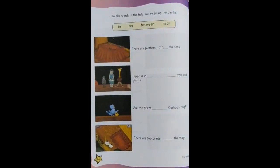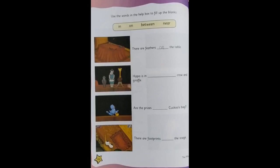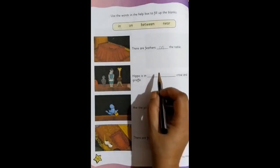Moving on to the next one. Hippo is dash crow and giraffe. So where is hippo standing? Yes, it is in between. In between. So we will write the word between.